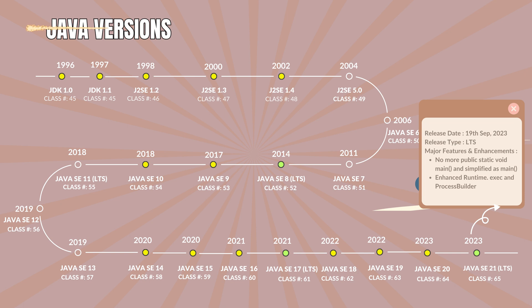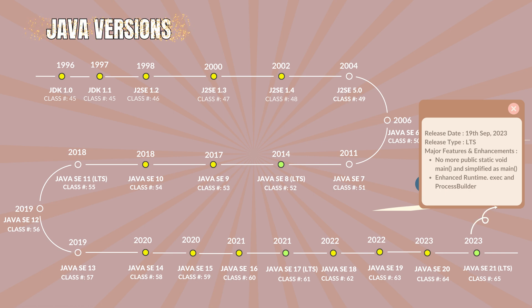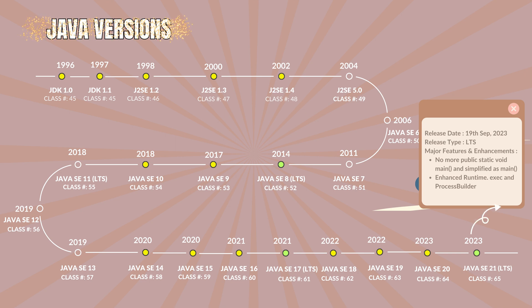Here comes the end of Java versions released so far. Java 22 is expected to release in March 2024. This history provides an overview of the evolution of the Java platform, showcasing the continuous enhancements and innovations introduced in each major version. It's important to note that new versions are regularly released and developers are encouraged to stay up to date with the latest releases for improved features, performance, and security. Okay, this concludes this video.